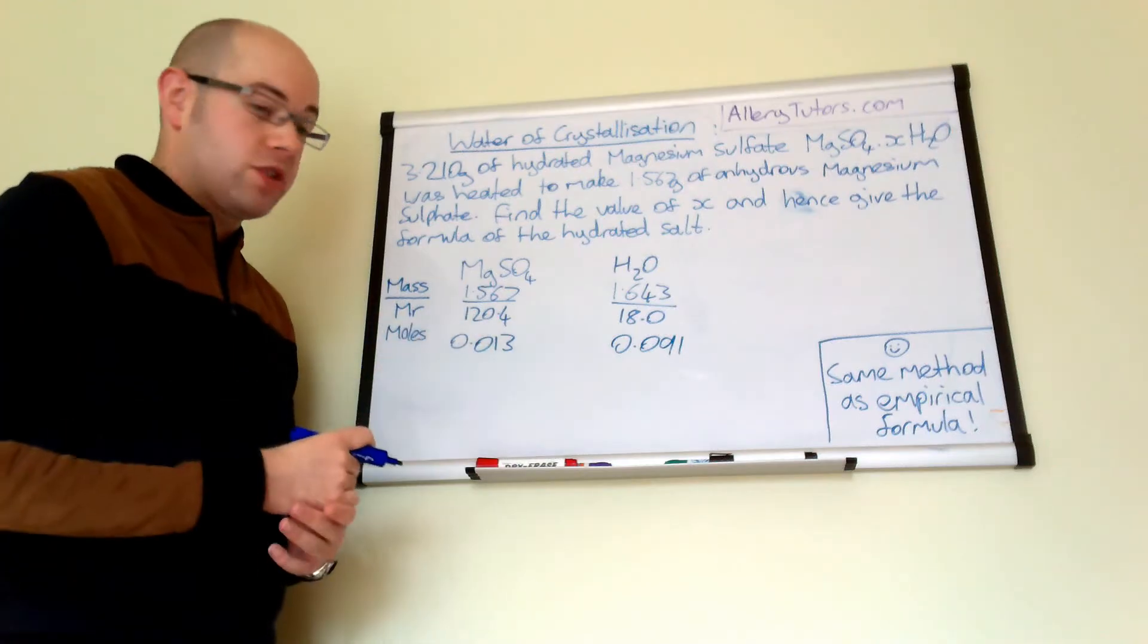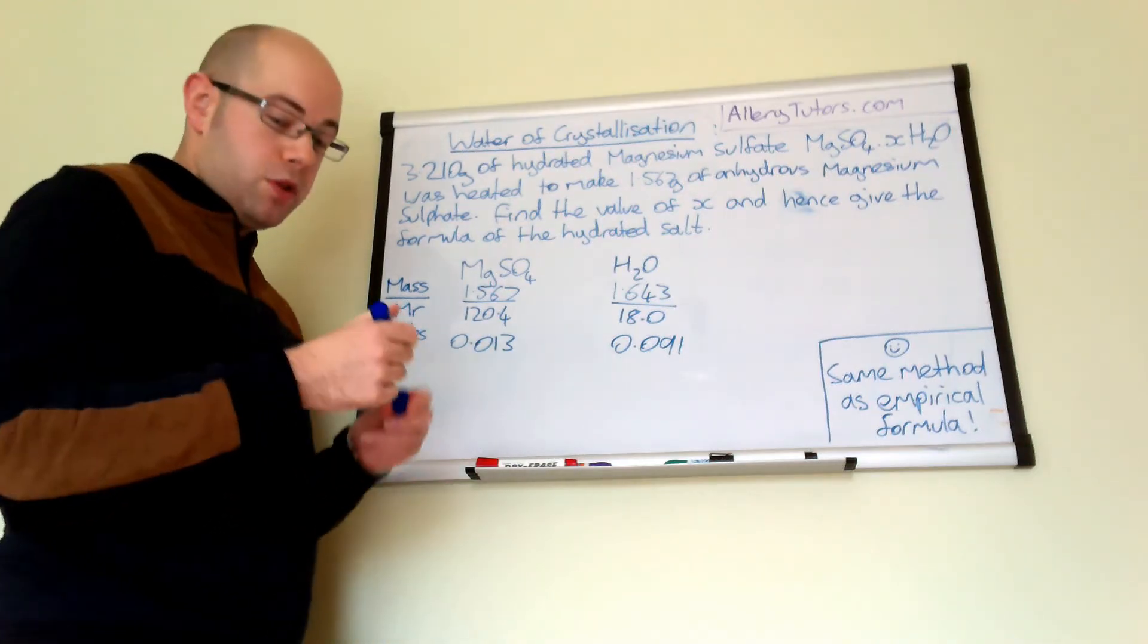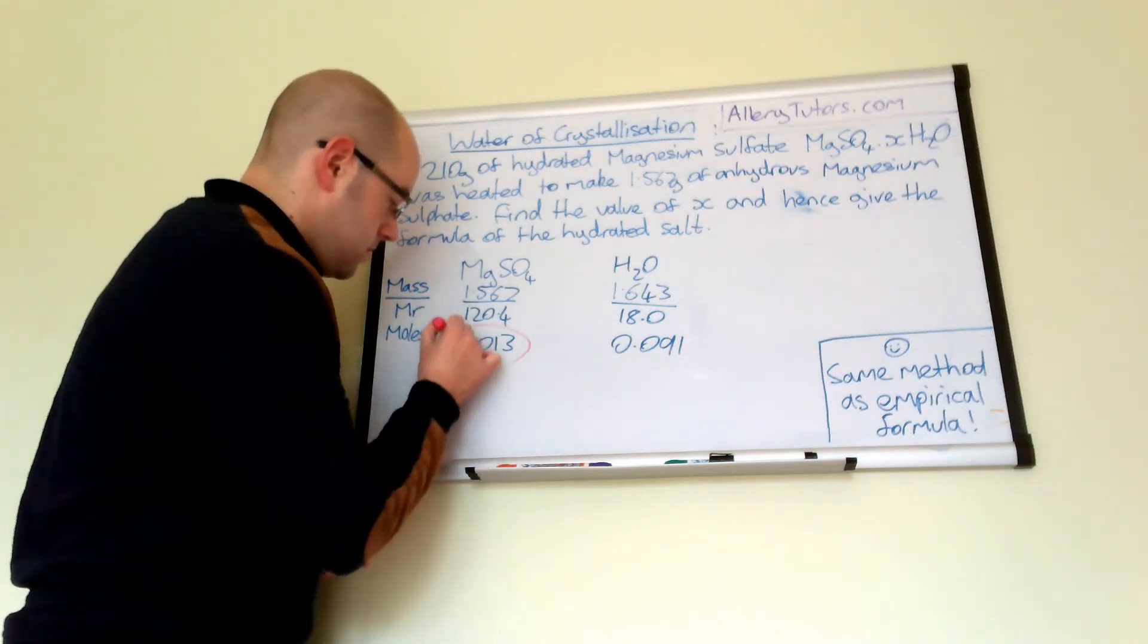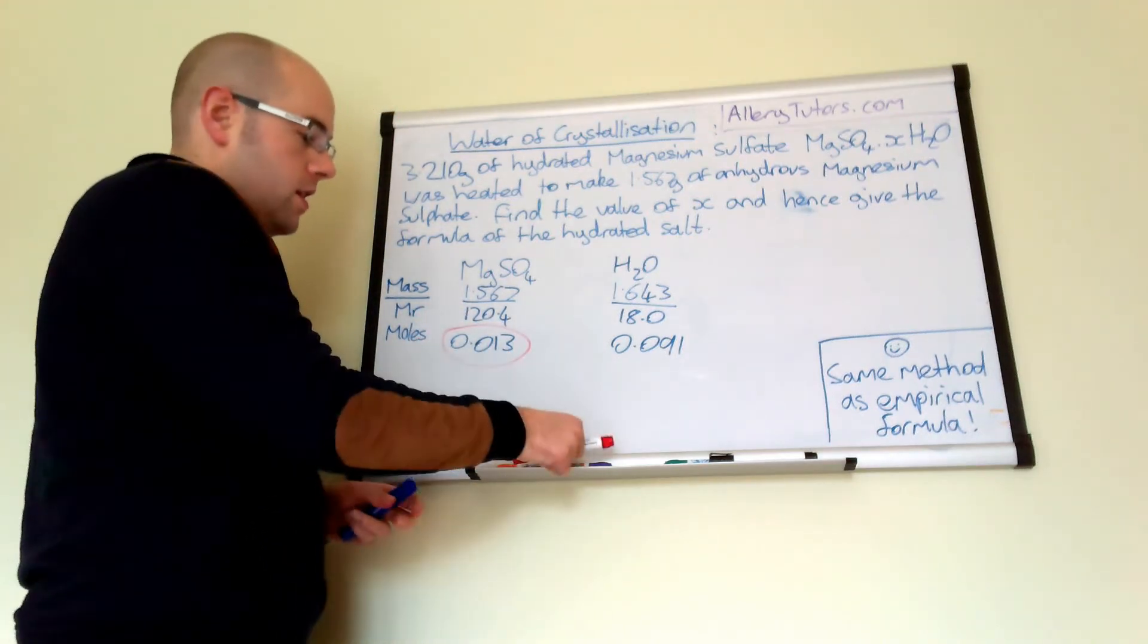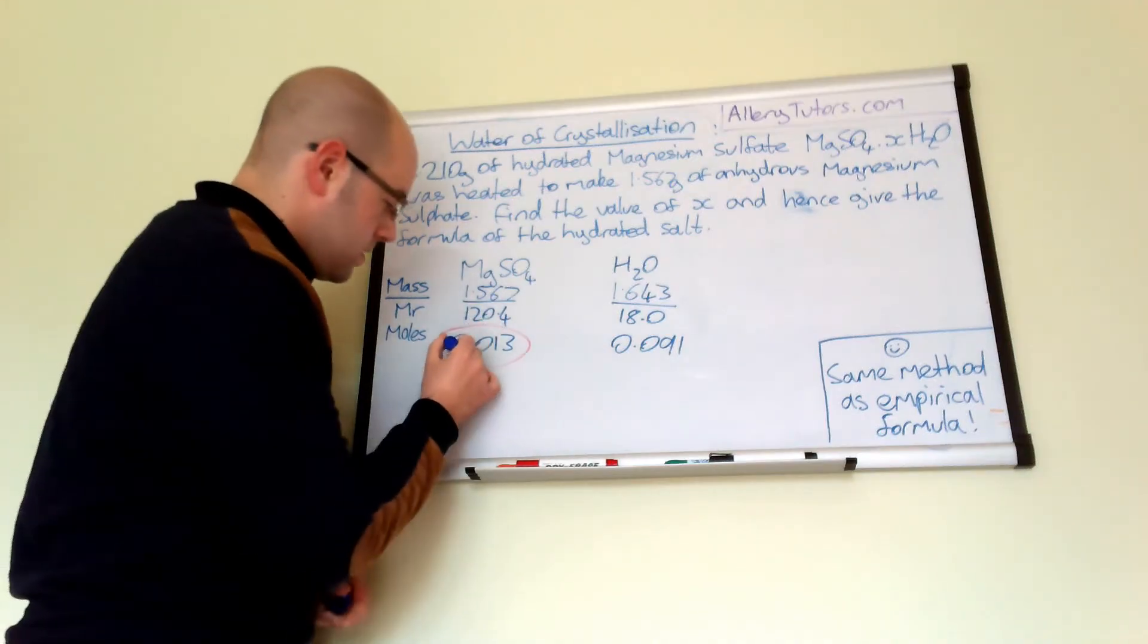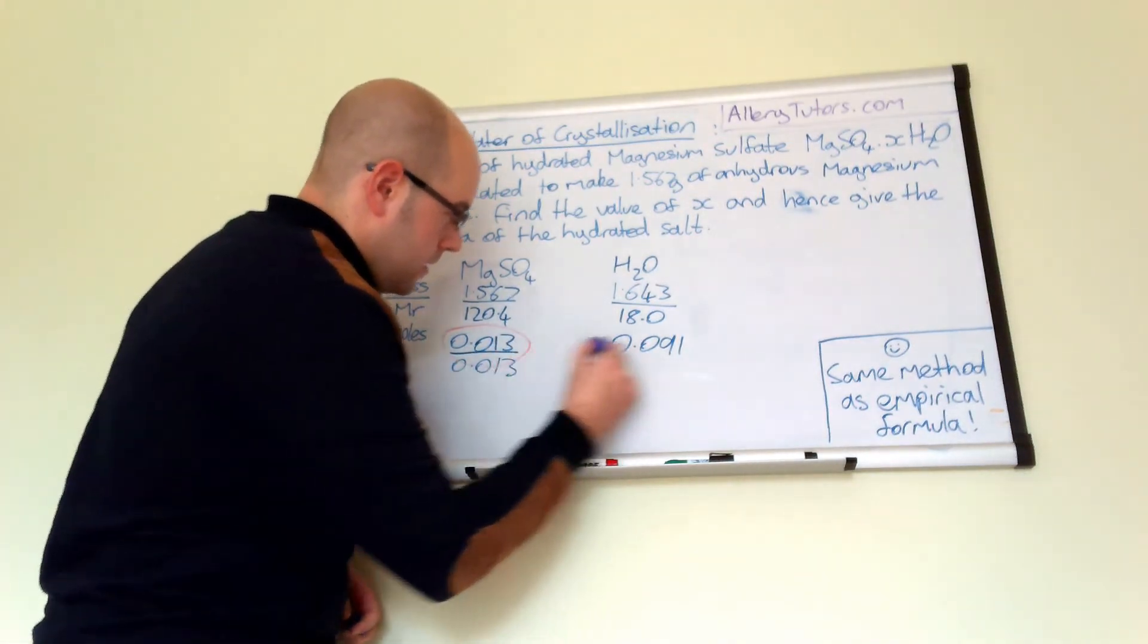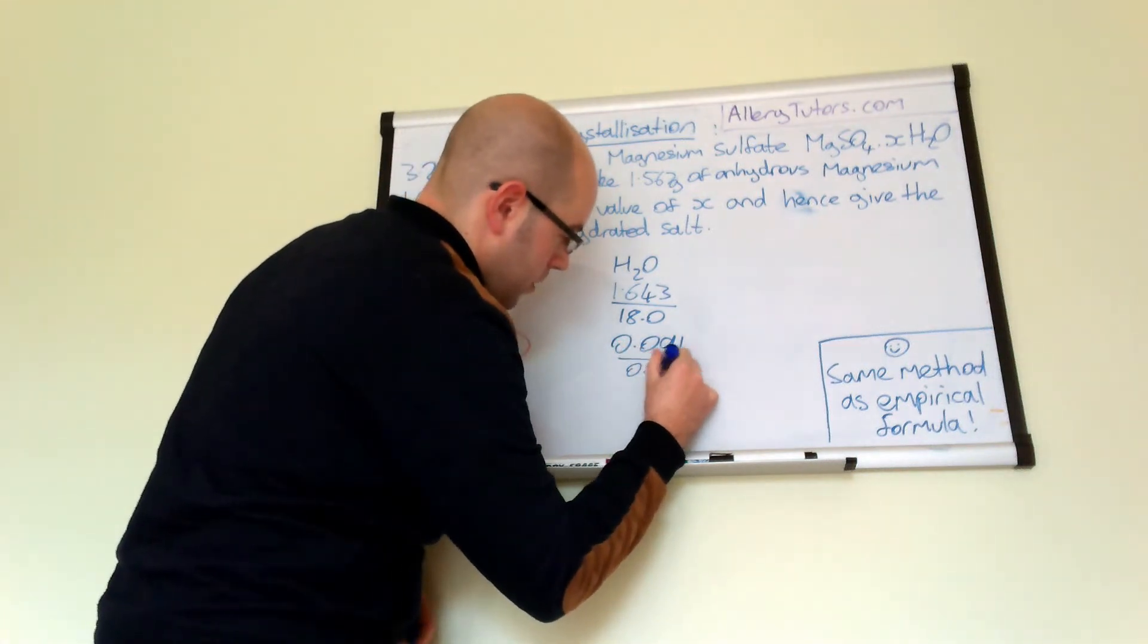And again, just like the empirical formula, you find out your lowest number of moles. And in this case, it's this one, which is 0.013. And you divide both sides by that number of moles. So this is going to be 0.013. And divide that by 0.013.